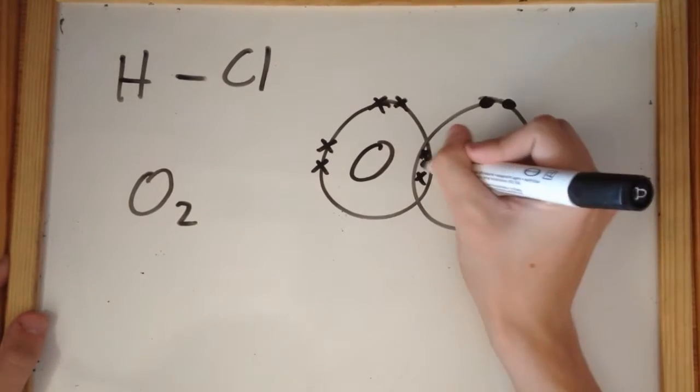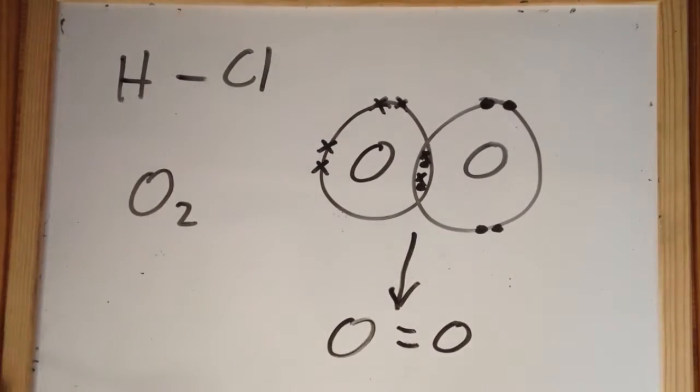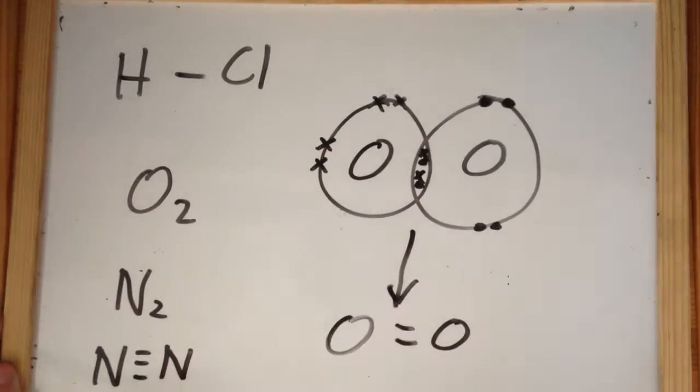So when two pairs of electrons are shared, like in diatomic oxygen, two lines are drawn. Diatomic nitrogen shares three pairs of electrons, so it is drawn using three lines.